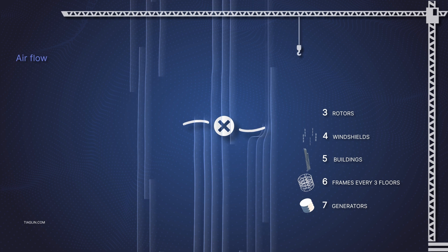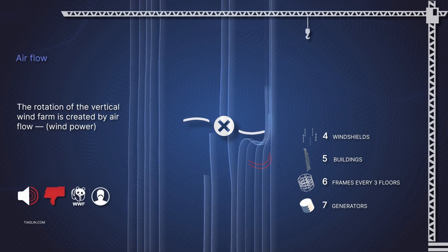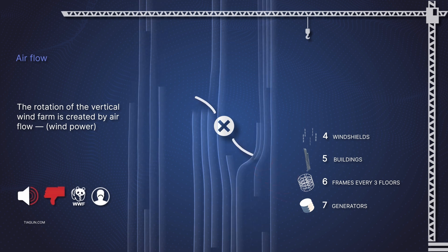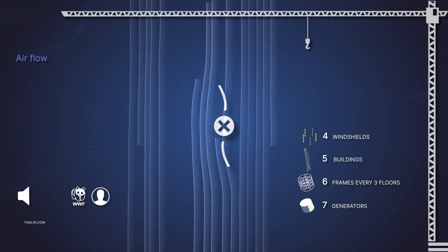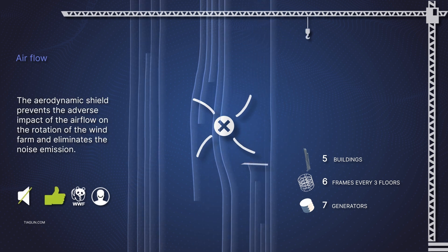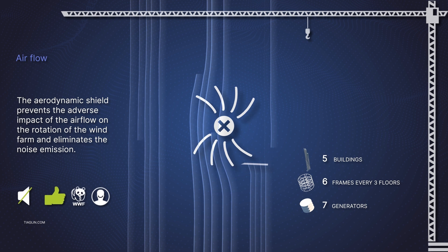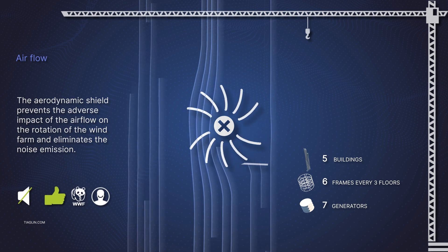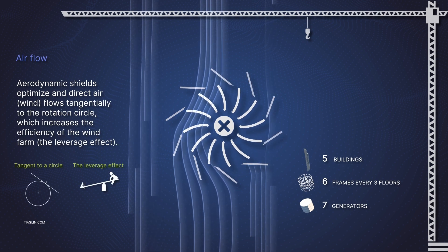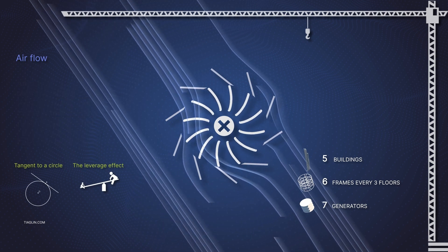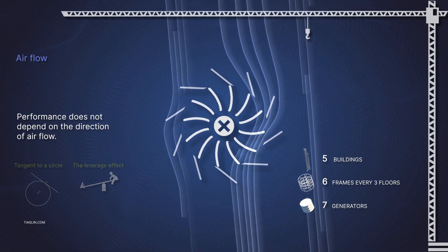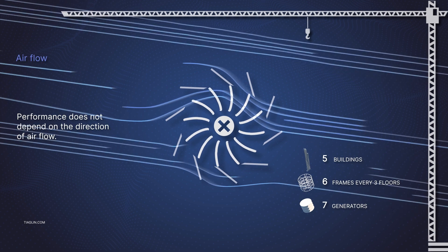The vertical wind farm rotation is created by airflow. The aerodynamic shield prevents the negative impact of the airflow on the rotation of the wind farm and eliminates noise exposure. Aerodynamic shields optimize and direct the airflow's wind at a tangent to the rotation circle, which increases the efficiency of the wind farm — the so-called leverage effect.